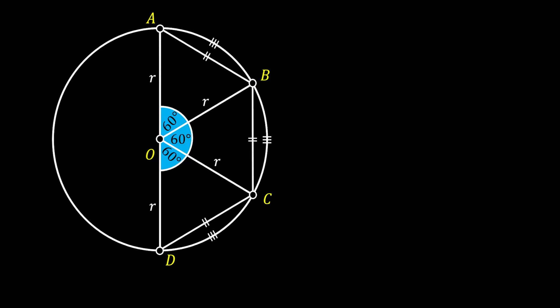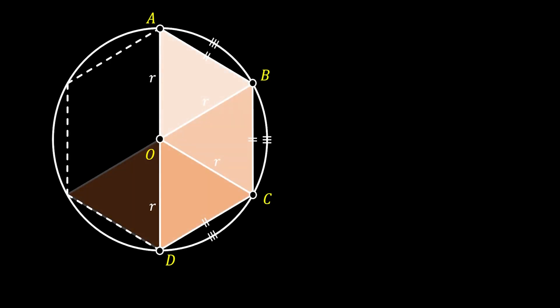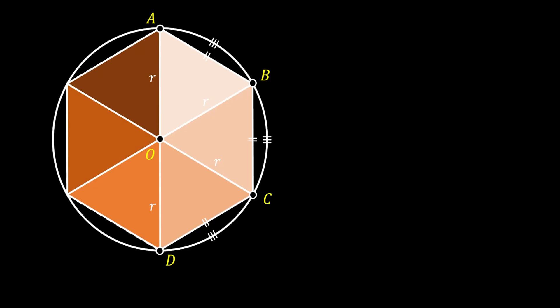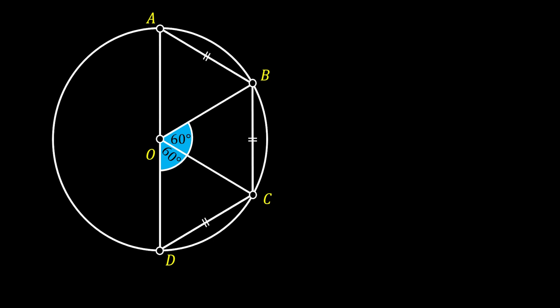If we mirror the image on the right side, we get a regular hexagon inscribed inside our circle. The regular hexagon consists of six equilateral triangles. Now let's go back and only keep angles BOC and COD on the sketch.